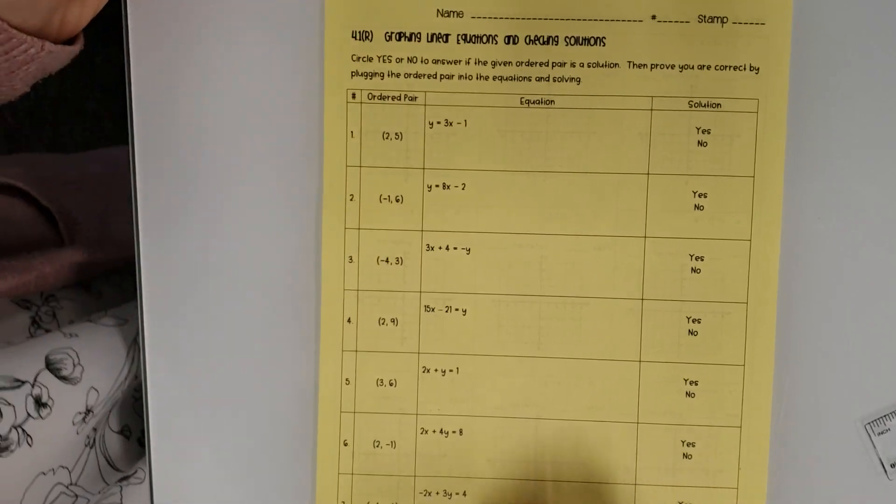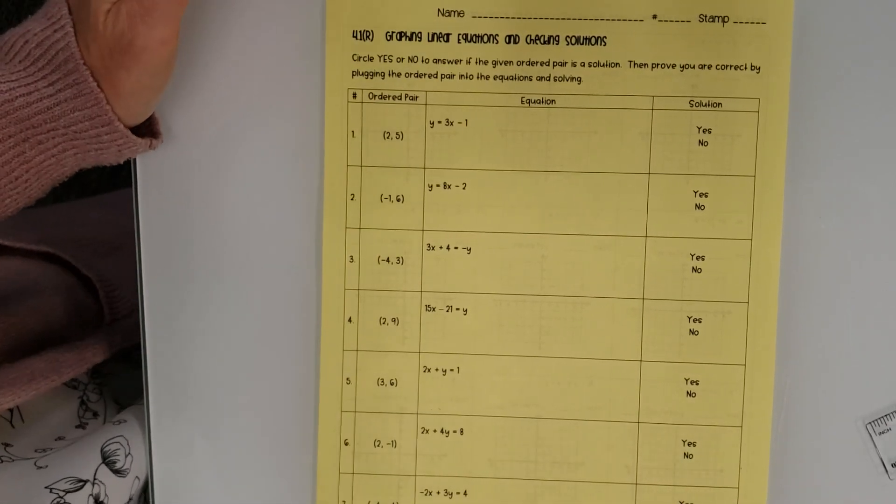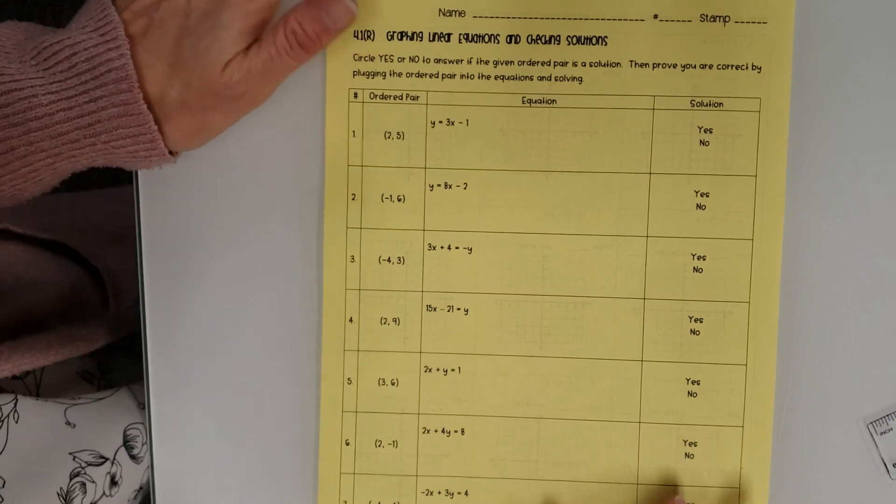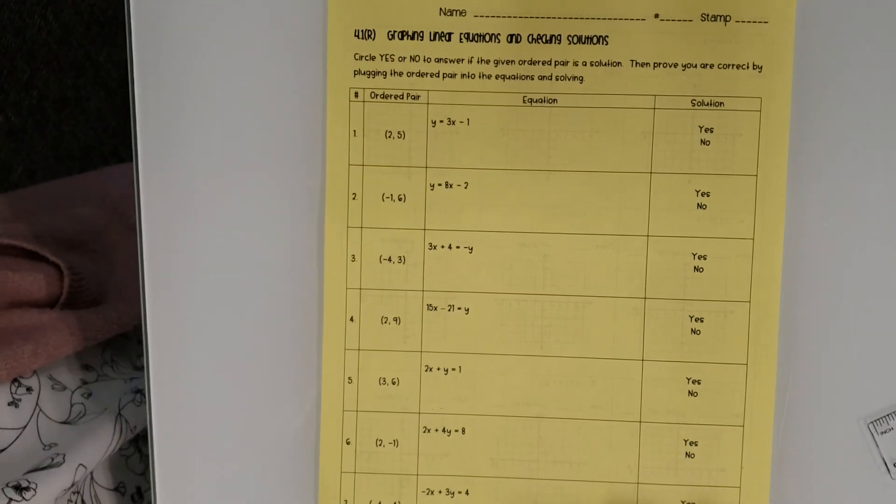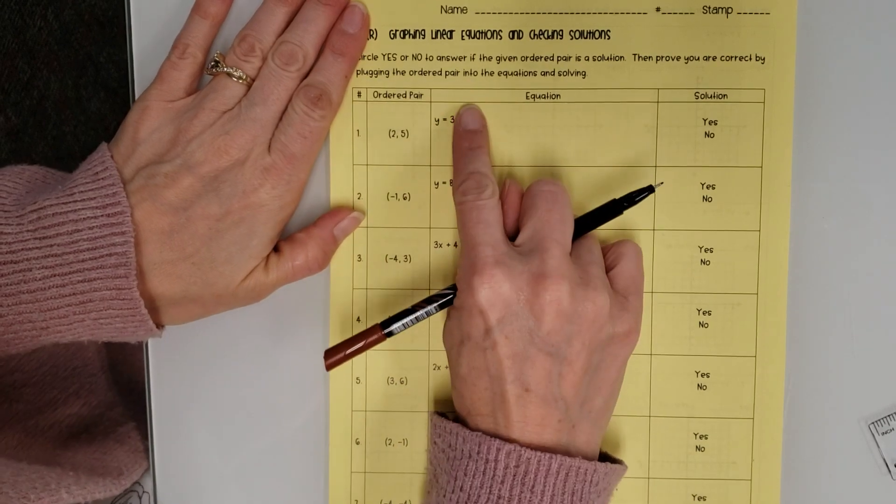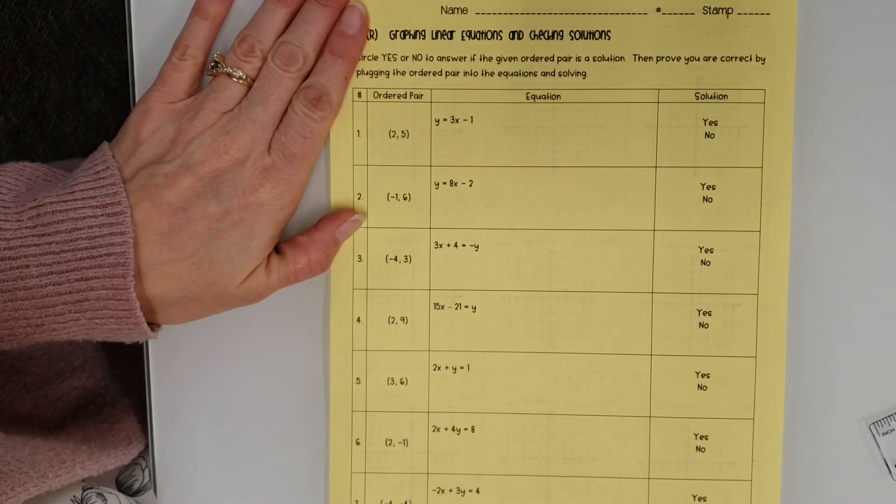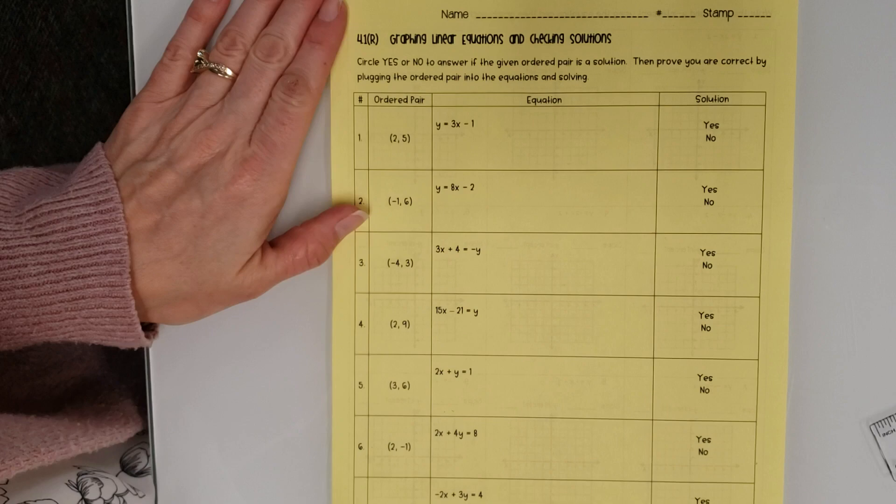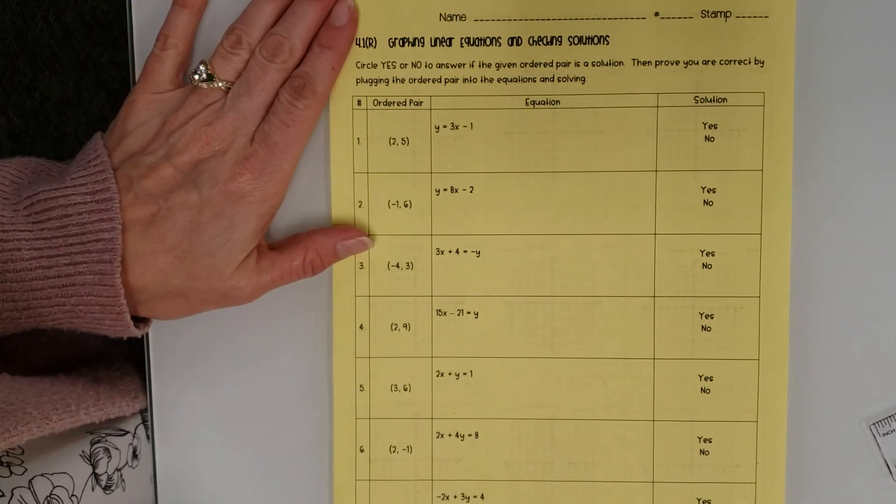Alright, this is the video to help you with the 4.1 homework. I'm just going to do a couple with you just so that you understand what you're doing. The first slide is just determining if the ordered pair listed on the left is a solution to the equation listed in the middle. And you need to make sure you show your work please, so by plugging them in.